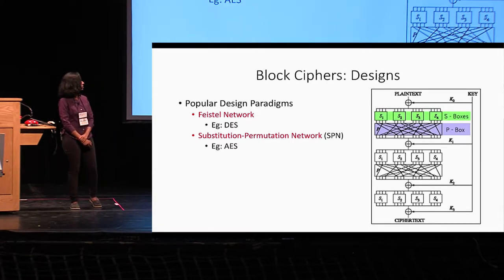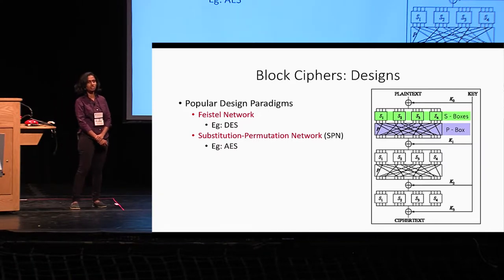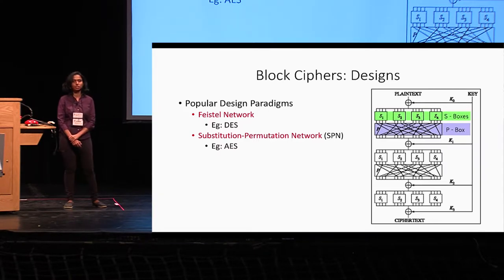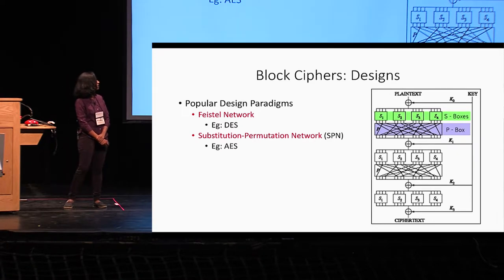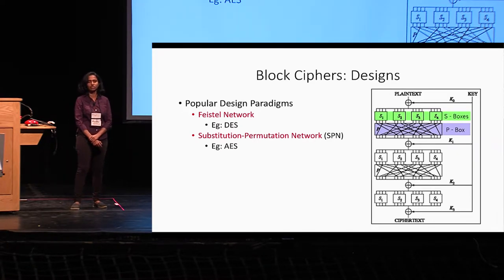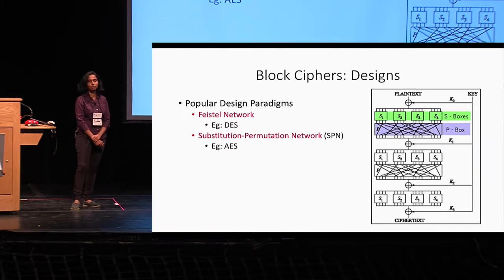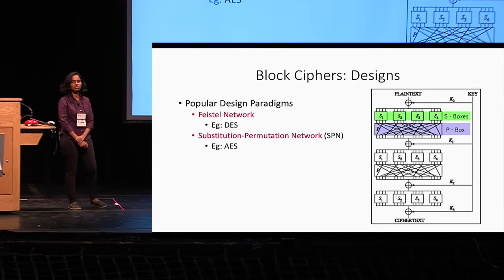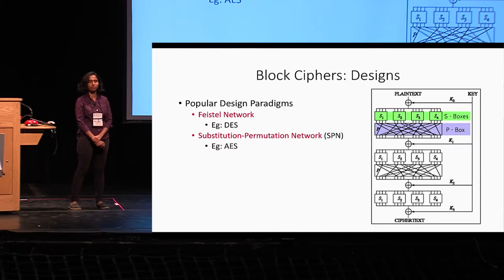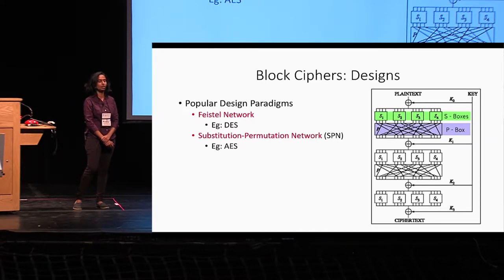The substitution step consists of the S-boxes highlighted in green, and the permutation step consists of a P-box and simple key mixing via XOR. This would be referred to as a linear SPN. I will define it more precisely later, and I'm just establishing this context so that when I talk about related work, the context is clear.